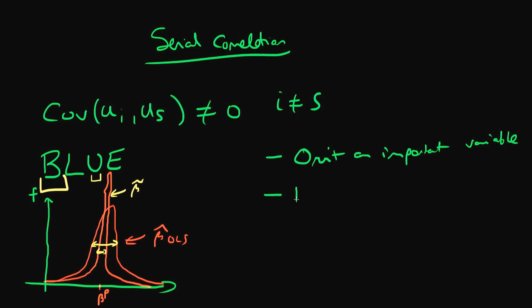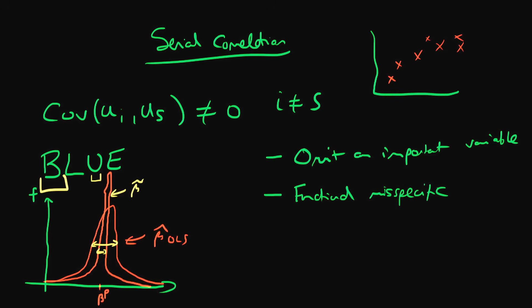Another way we can get serial correlation in our model is functional misspecification. This is not true serial correlation — it comes about as a result of trying to fit a linear line to data which is itself curved. If I have data that fits a curve but I naively fit a straight line to it, I get persistent runs of positive errors followed by persistent runs of negative errors. That is not really true serial correlation; it's serial correlation which has resulted from misspecifying my model. This functional misspecification can also lead to least squared estimators being biased rather than unbiased.